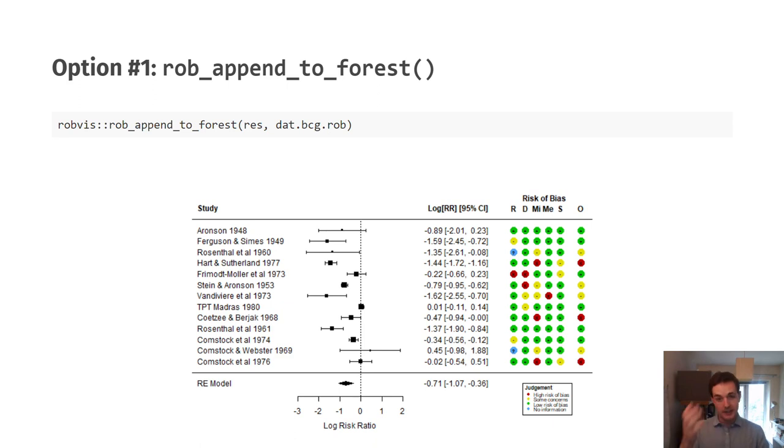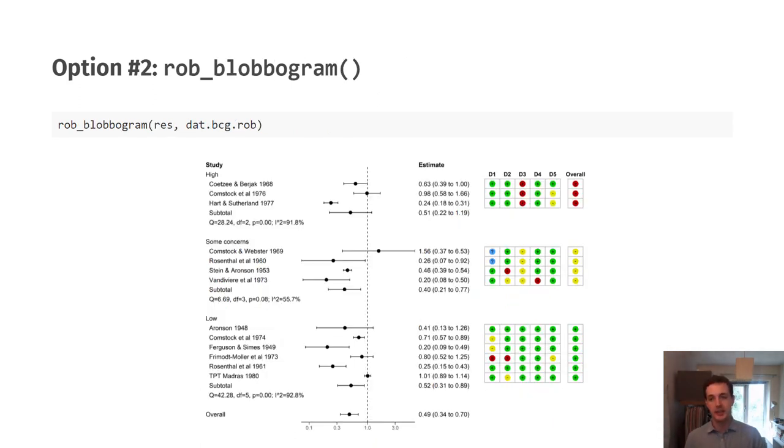This is where the second function comes in which is a bit more sophisticated and probably has the best name of any function I've worked on in any package: rob_blobbogram. Again it is just taking your results object from your meta-analysis and your risk of bias data set as standard and plugging it into this function. So it's really not very onerous on the user to produce these plots once you have the data ready to go. What this function does is it takes whatever meta-analytical model you've applied and applies it across your studies grouped by risk of bias level.